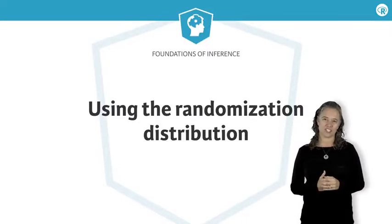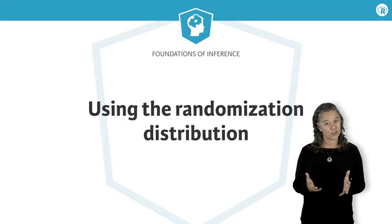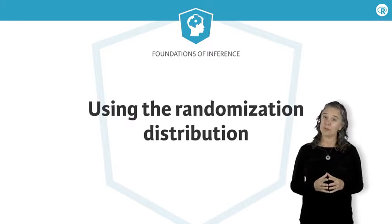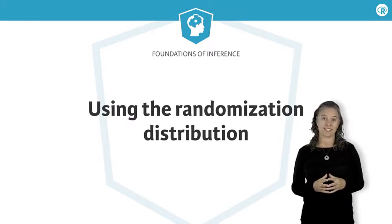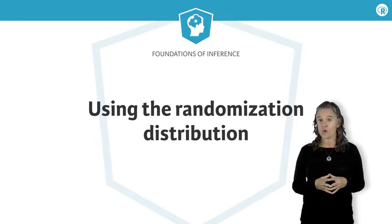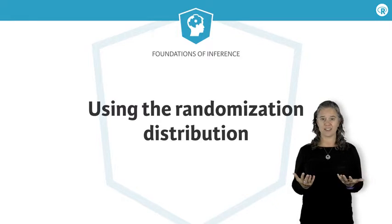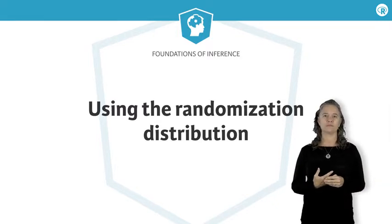Recall that the logic of statistical inference is to compare the observed statistic to the distribution of statistics that come from a null distribution. You've now seen how to create the distribution with your own R code. The next question to ask is: how do we use the information in the null distribution?